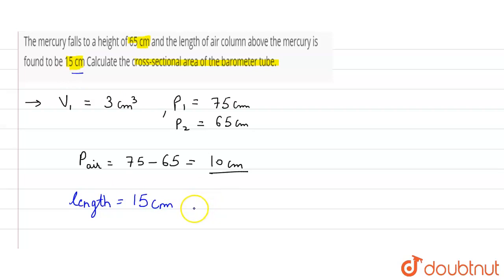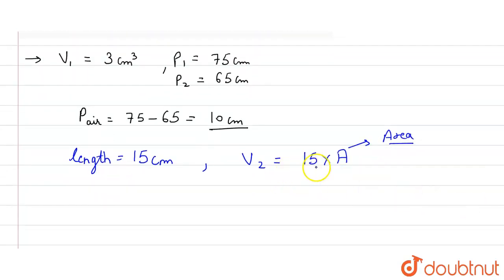...then the volume of trapped air will be equal to volume V₂, which will be equal to 15 into A. If A is the area we are considering, then volume will be length into area.